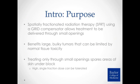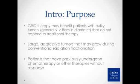The purpose of spatially fractionated radiation therapy, or SFRT, is that you can use this GRID compensator to treat through small openings in the field, mimicking things like high-dose brachytherapy. The GRID can benefit large, bulky tumors that are limited by normal tissue toxicity. Very large tumors require very large treatment fields, which often can't be treated to high doses because of surrounding normal tissues. By treating only through the small openings, you can spare areas under the block while delivering a high single-fraction dose to the tumor, and the patient can tolerate it well because you're still sparing some skin.